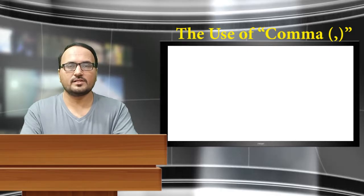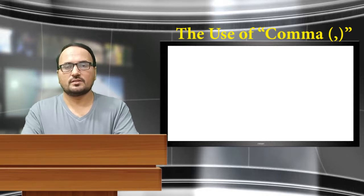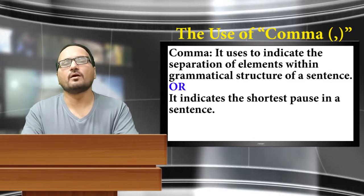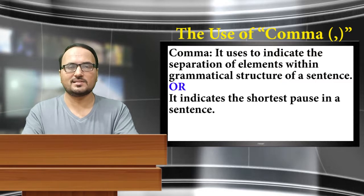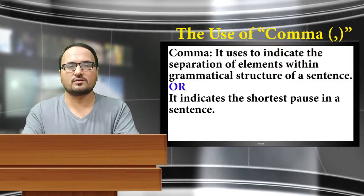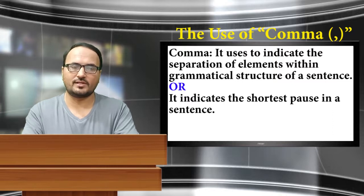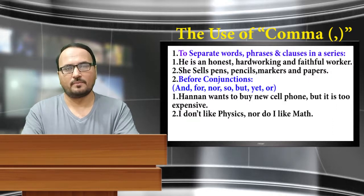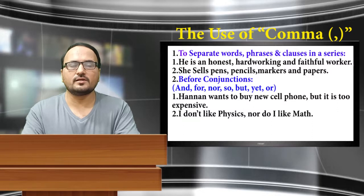Assalamu alaikum, thanks for clicking my channel, English with Aryan Yusuf. Today in our English grammar lesson, we are going to discuss one type of punctuation mark: the use of comma. What does comma mean? It is used to indicate the separation of elements within the grammatical structure of a sentence, or, by a second definition, it indicates the shortest pause in a sentence.